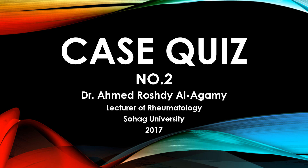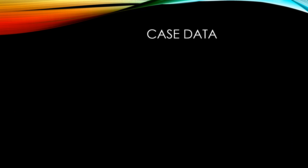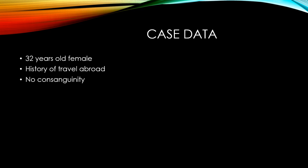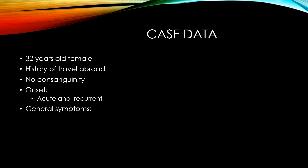Bismillahirrahmanirrahim. Today we will have case quiz number two. Case data: 32 years old female with history of traveling abroad. There is no consanguinity. The onset is acute and recurrent. General symptoms are flu-like symptoms — so there is acute and recurrent flu-like symptoms associated with fatigue and malaise.